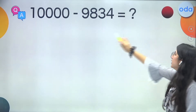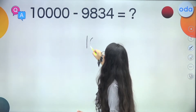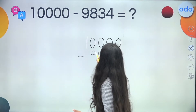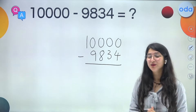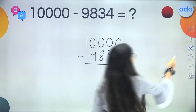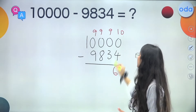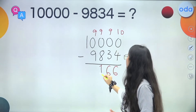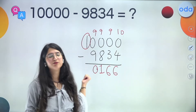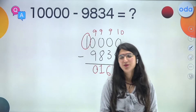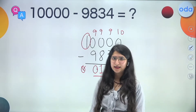Now let us try: 10,000 minus 9,834. Keep the sutra in mind — that is very, very, very important. Last from 10, all from 9. So: 10 minus 4 is 6, 9 minus 3 is 6, 9 minus 8 is 1, 9 minus 9 is 0. For the leading 1, the predecessor is 0 — no need to write it. So our answer is 0,166, which is 166.